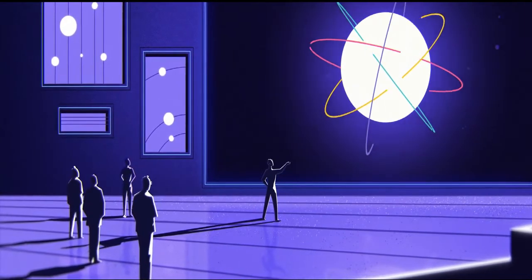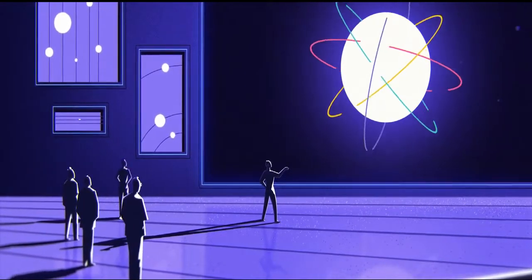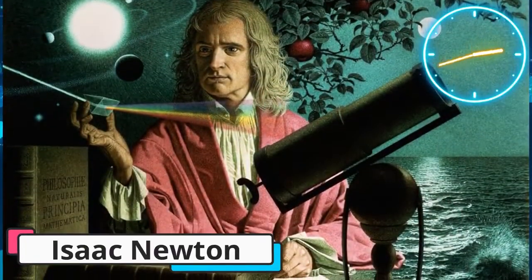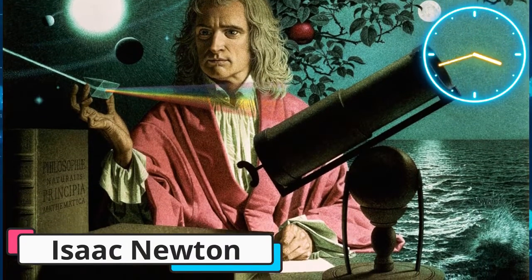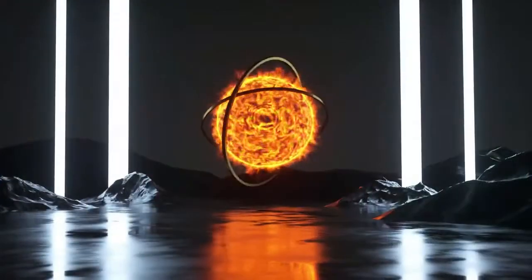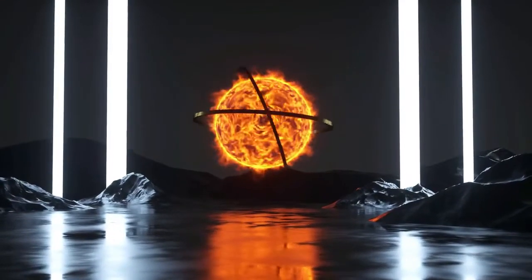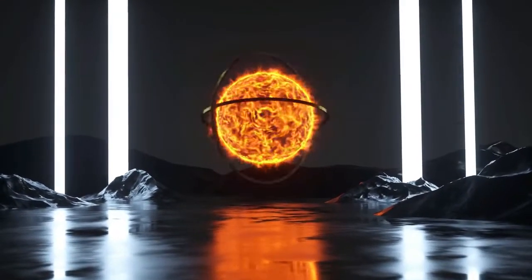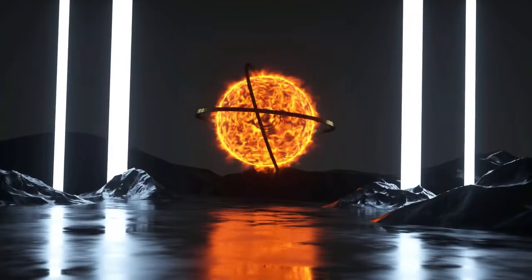The existence of black holes was predicted well before the 20th century. About a hundred years after Newton worked out his theory of gravitation, the English astronomer John Michell recognized in 1784 the possibility that the gravity of a very large star might be so great that nothing, not even light, could escape it.